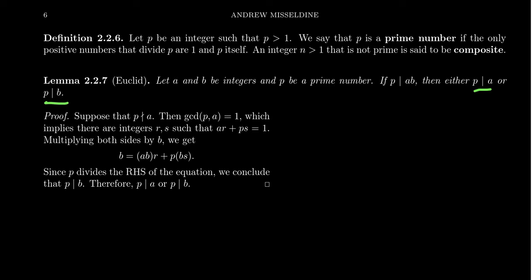We're going to assume that P does not divide A. If P doesn't divide A, that suggests the greatest common divisor between P and A equals one. This is significant because P is a prime number. The only divisors of P are one and P. If P doesn't divide A, then the GCD has to be one.